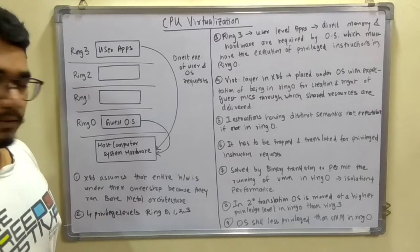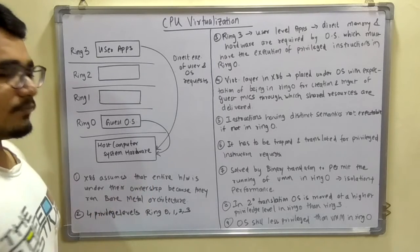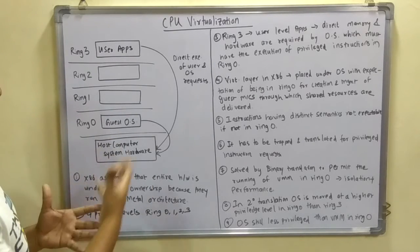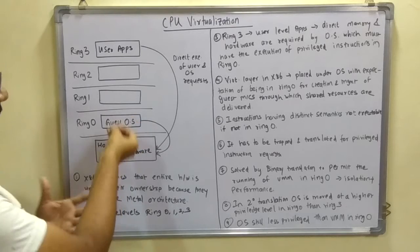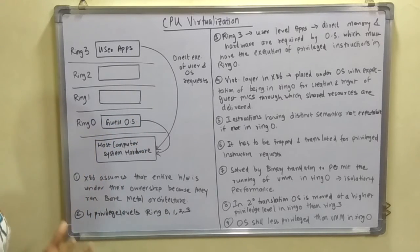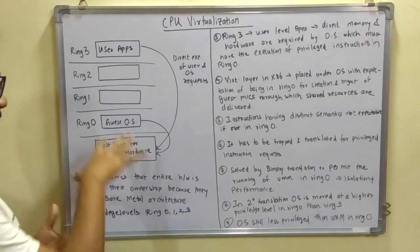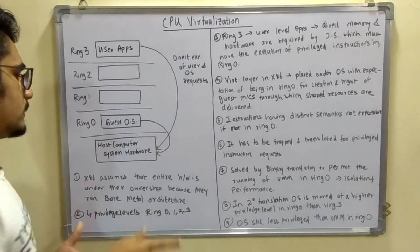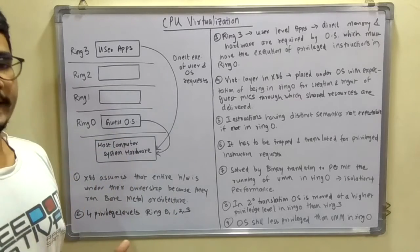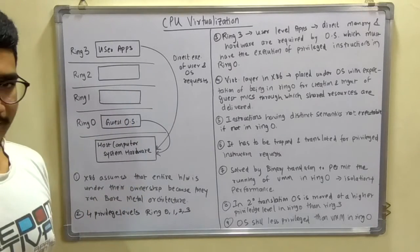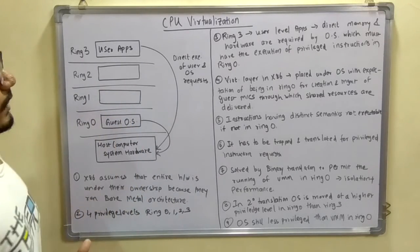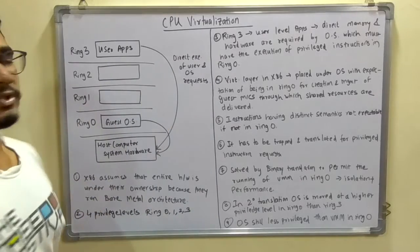In binary translation, the OS is less privileged than the VMM in Ring 0. The VMM sits between the guest OS and the host computer hardware. In this arrangement, the VMM has the highest privilege level above any operating system.